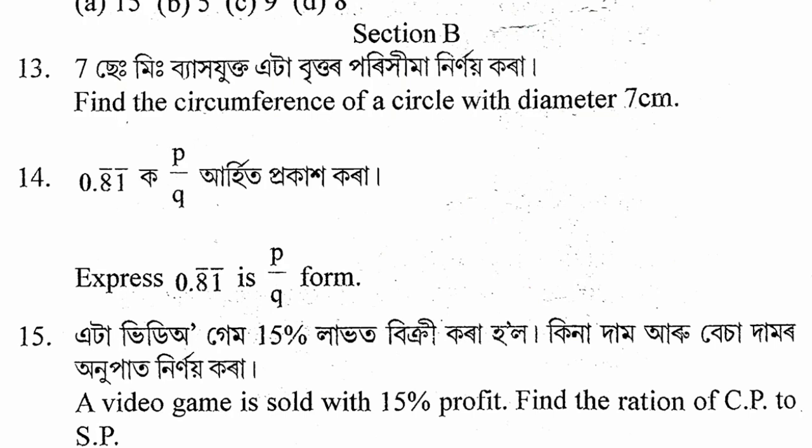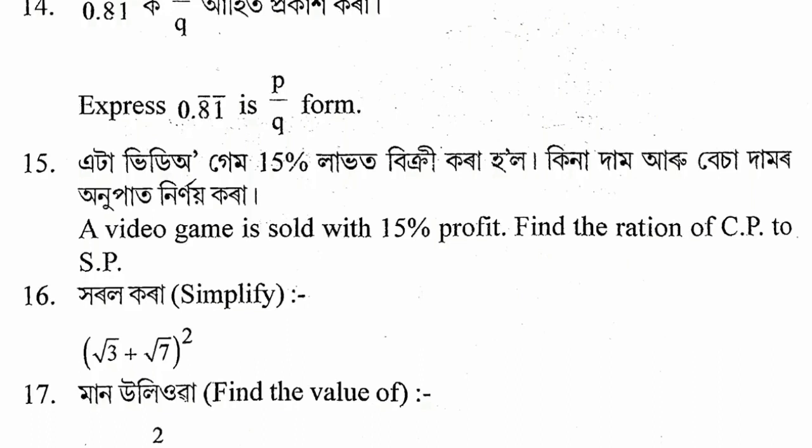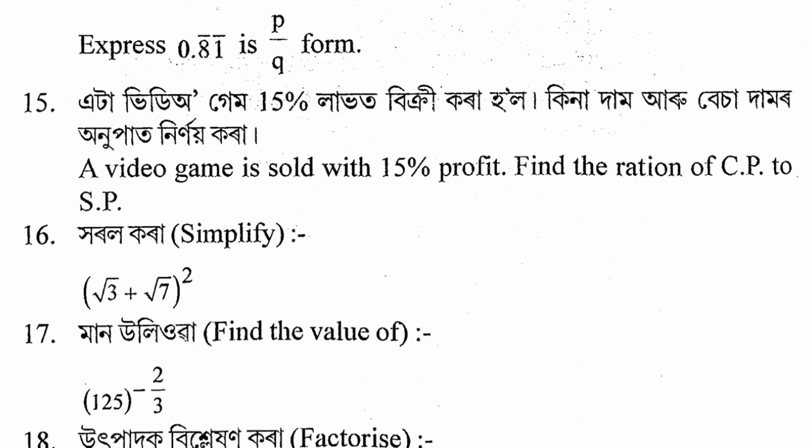Section 2, question: 0.810 p by qr. For practice, p by qr gives 0.820 p. The next question involves a video game sold at 15% profit. We need to find the cost price to selling price ratio. Another question involves expanding (√3 plus √7) whole square.